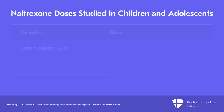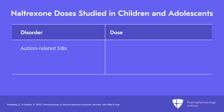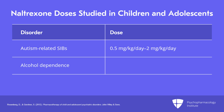For autism and autism-related self-injurious behaviors, naltrexone has been studied in children in a dosage range from 0.5 to 2 milligrams per kilogram per day. For alcohol dependence in adolescents, the studies recommend a daily dose of 50 milligrams per day.